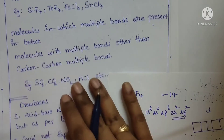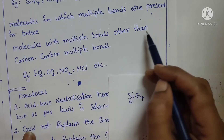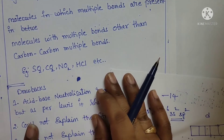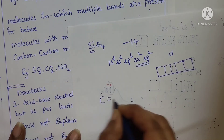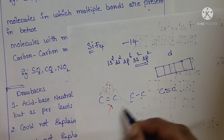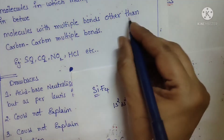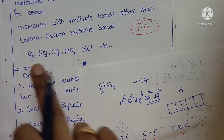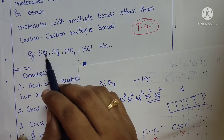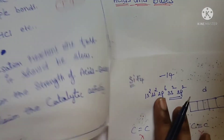Trick number 4: molecules with multiple bonds — other than carbon-carbon multiple bonds. Compounds with C=C, C-C, or C≡C bonds do not act as Lewis acids. But molecules with multiple bonds between other atoms can act as Lewis acids. Examples include SO2, CO2, NO2, and SCl2. In SO2 and CO2, the atoms are different (sulfur-oxygen and carbon-oxygen), so these act as Lewis acids. These 4 tricks are very important.